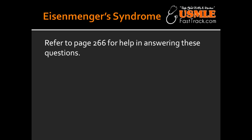What is Eisenmenger's Syndrome? In Eisenmenger's Syndrome, because of an uncorrected VSD, ASD, or PDA, to compensate for this left-to-right shunt, there will be pulmonary vascular hypertrophy, which results in progressive pulmonary hypertension. As pulmonary resistance increases, the shunt reverses from left-to-right into right-to-left, which causes late cyanosis.